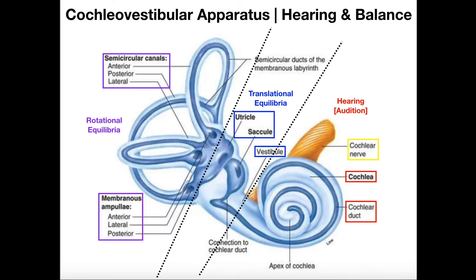When we talk about the bony labyrinth, it's bony but it really is filled with a bunch of spaces and tubes and there's a lot of things inside, which is why it's called a labyrinth. And also because we have all this ductwork — it goes all over the place, this thing twirls around like a snail — that's why it's called a labyrinth.